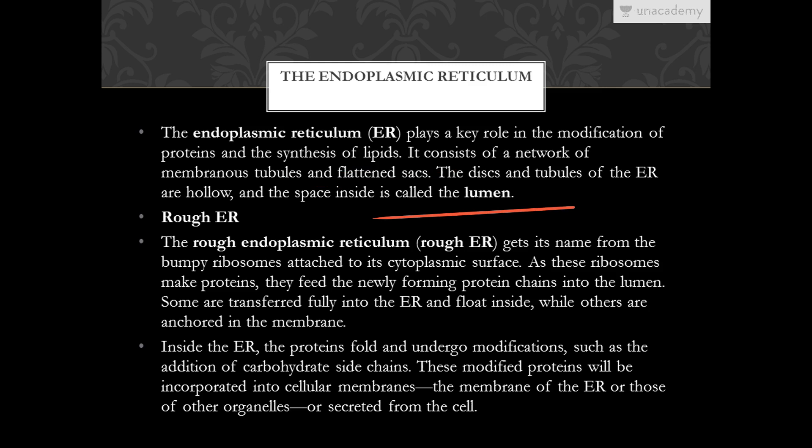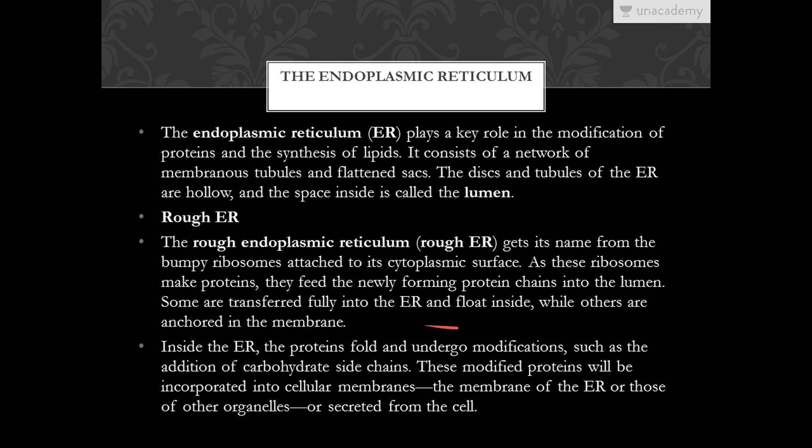There are two types of endoplasmic reticulum: smooth and rough. The rough endoplasmic reticulum gets its name from the bumpy ribosomes attached to its cytoplasmic surface. As these ribosomes make proteins, they feed the newly forming protein chains into the lumen. Some proteins are transferred fully into the ER and float inside, while others are anchored in the membrane. Inside the ER, proteins fold and undergo modifications such as the addition of carbohydrate side chains.